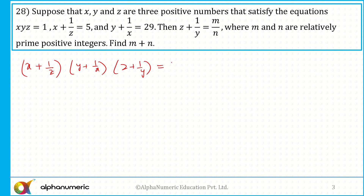If I simplify this, what will I get? That is equal to xyz plus x plus y plus z plus 1/x plus 1/y plus 1/z plus 1/(xyz). Now substitute all the values. x plus 1 by z is equal to 5, y plus 1 by x is equal to 29, and z plus 1 by y — that is the one we need to identify — is equal to m by n.